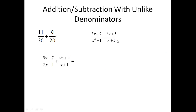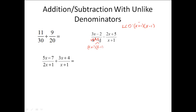With the third one, we start by getting our LCD. I need to factor both denominators first. The first one factors into x plus 1 and x minus 1. The second denominator doesn't factor at all. So for the LCD, I take x plus 1 and x minus 1 from the first group — and the second denominator is already accounted for there. The LCD is x plus 1 times x minus 1. The first fraction has 3x minus 2 over x plus 1 times x minus 1, so it's not missing anything and gets left alone.